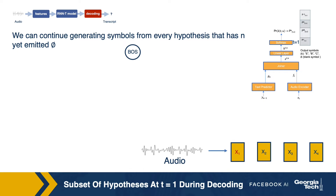We would have four probabilities from the softmax: three corresponding to the letters of our language, and one corresponding to the blank symbol. Whenever we extend a hypothesis with a blank, that candidate moves to the next time frame in the RNN-T. So extension with blank always moves us to the next audio frame index, whereas extensions with non-blank symbols — the letters of the language — continue to stay in the current time frame.